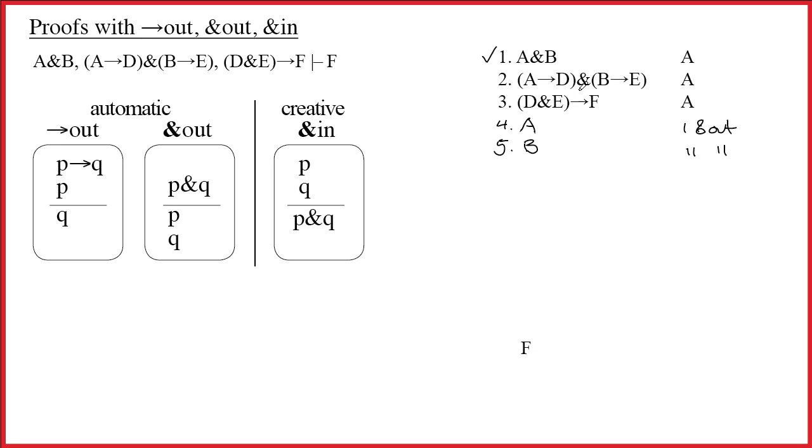Line two. Line two also has the ampersand as the main connective. Therefore, I'm going to get two more lines. Six and seven. And every time the ampersand is the main connective, everything in front of it goes on one line. A arrow D. Everything after it on another line. B arrow E.